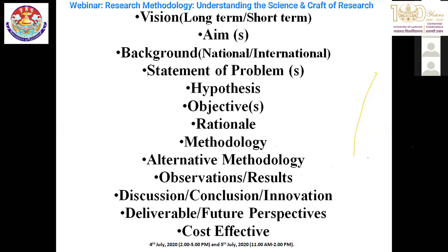In a research career, a student or researcher should have a long-term goal, referred to as a vision. What is your vision in science? Accordingly, you should identify one aim or maybe more than one aim. Then, based on that aim, look into the background — what work is being done at the national and international level — and then look at the statement of the problem, decide your hypothesis, and define your objectives to achieve that goal.